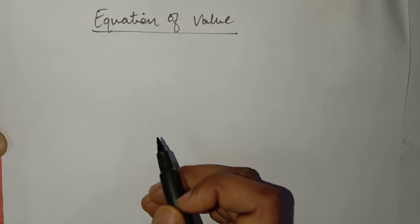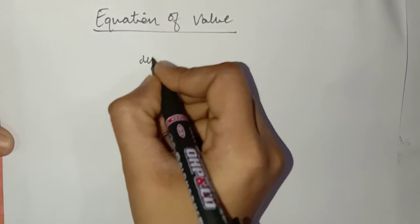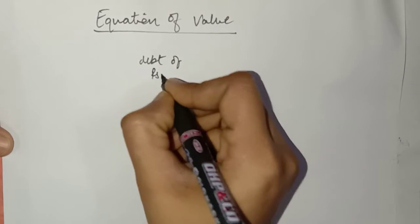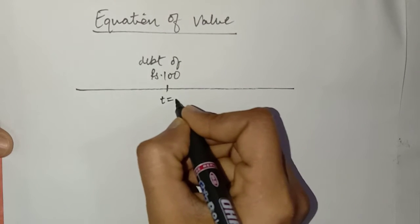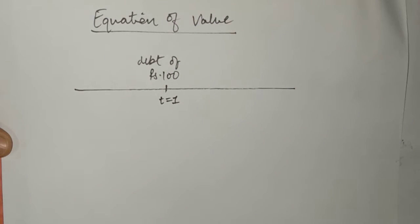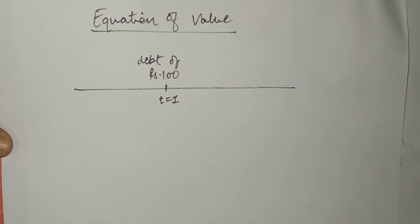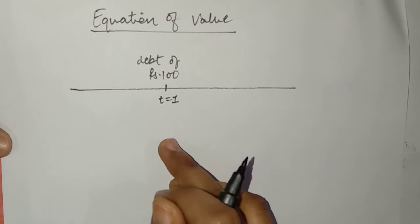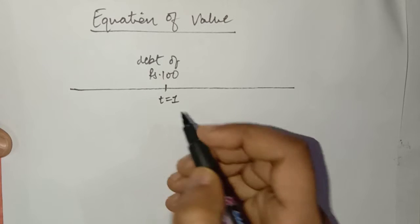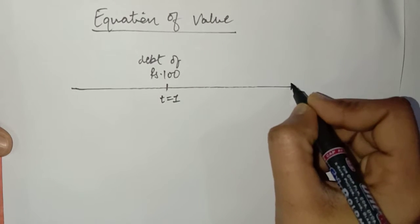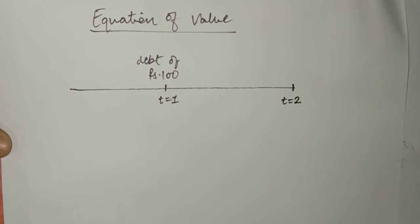For this, I am taking one example. There is a debt of Rs. 100 which is due in one year. That is when T equals 1, we need to make a payment of Rs. 100 loan amount. Due to some reason, we are unable to make this payment on the due date, that is when T equals 1. Later on, we make the payment after 1 year, that is when T equals 2.